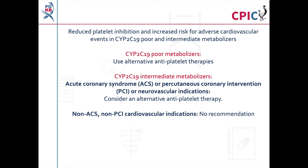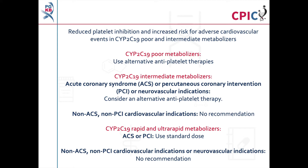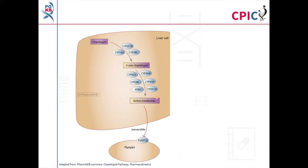No recommendation is given for CYP2C19 intermediate metabolizers taking clopidogrel for non-ACS and non-PCI cardiovascular indications. Standard dosing of clopidogrel can be used with patients who are CYP2C19 rapid or ultra-rapid metabolizers being treated for ACS or PCI. No recommendation is given for CYP2C19 rapid or ultra-rapid metabolizers taking clopidogrel for non-ACS and non-PCI cardiovascular indications or for neurovascular indications.